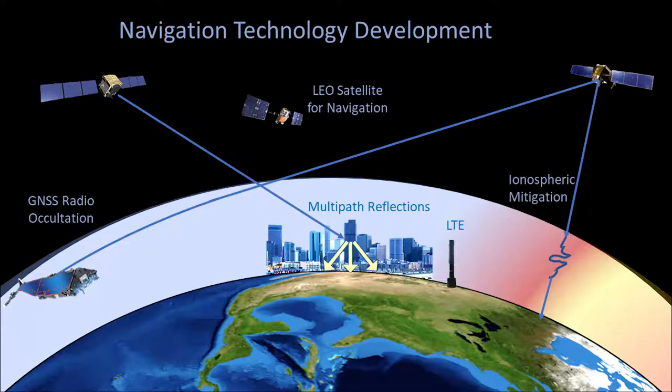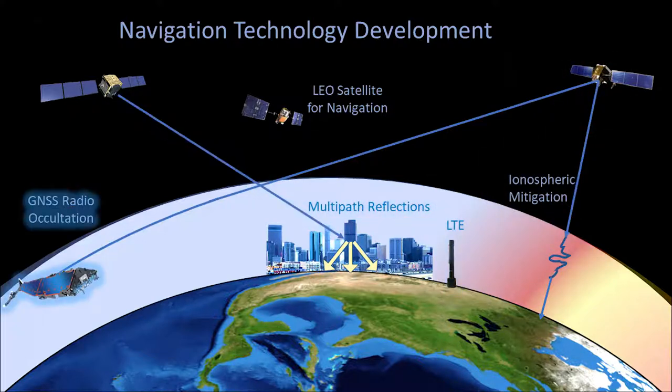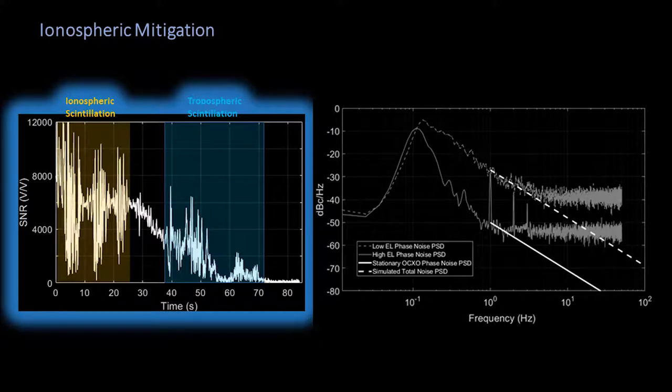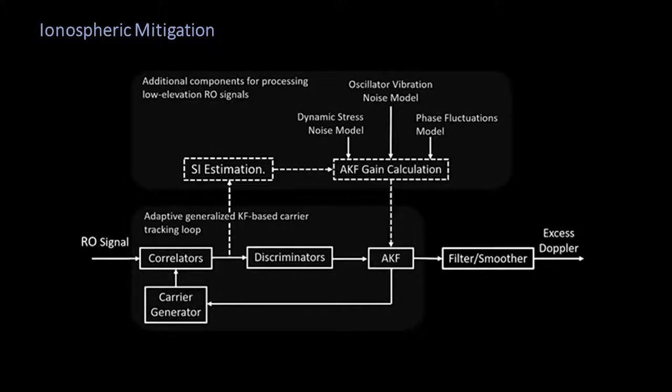Another research area in this group is navigation technology development, where we mitigate disturbances, multipath, and dynamic effects on navigation signals, and investigate emerging navigation systems and methods. GNSS radio occultation signals may experience ionospheric and tropospheric scintillation, which are abrupt fluctuations in both the signal amplitude and carrier phase. Under these circumstances, it's challenging for GNSS receivers to maintain lock of the signal. Our lab has developed phase noise models for the scintillation effects and advanced signal tracking algorithms, which optimize the receiver performance in high dynamic and low signal quality situations.